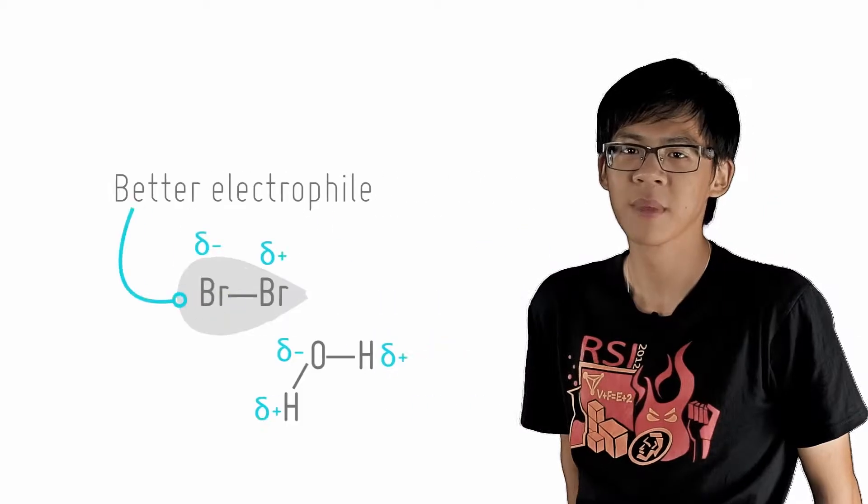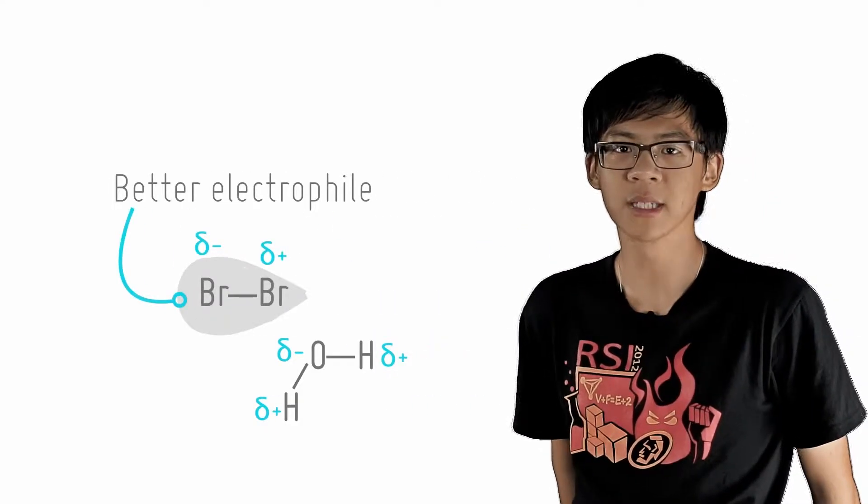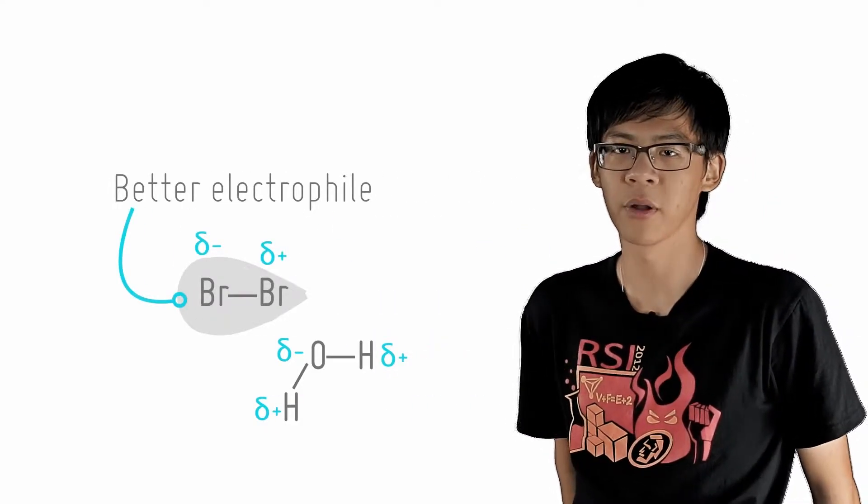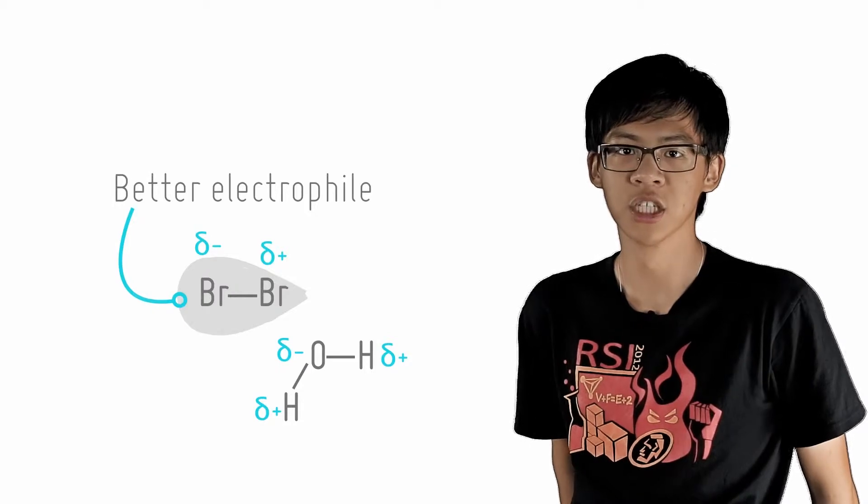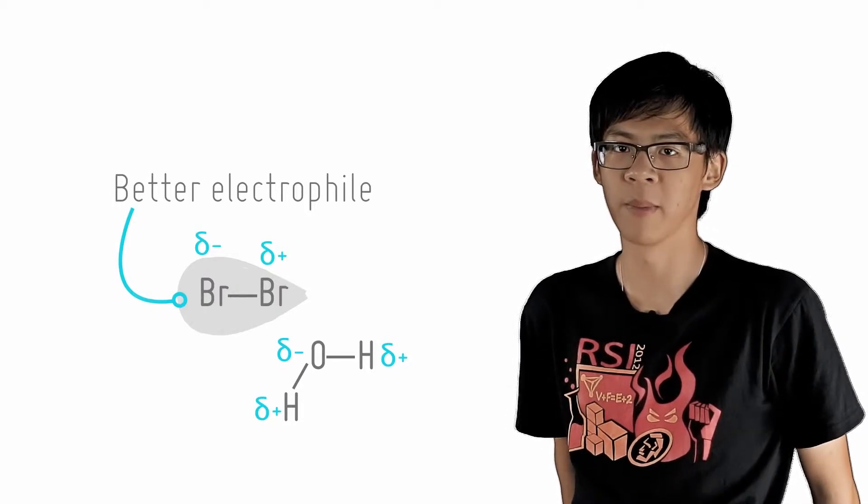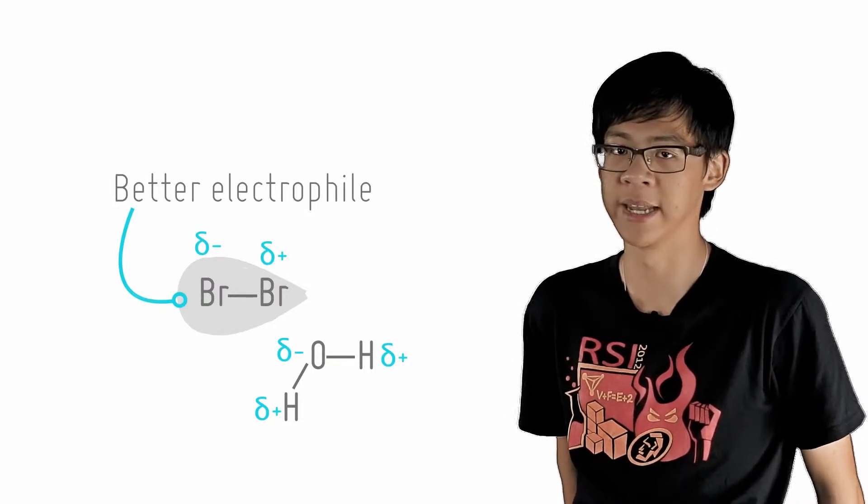Why does this happen? Water, unlike CCl4, is a polar solvent. Using water will polarize Br2 molecules, changing the electron density in bromine to form a partially positive end and a partially negative end. This makes bromine a better electrophile.